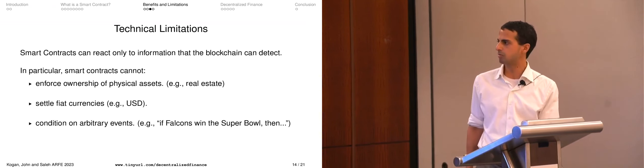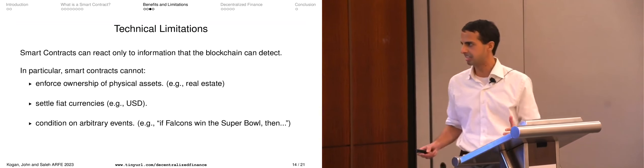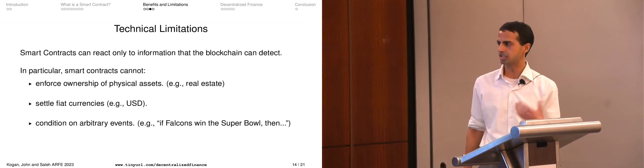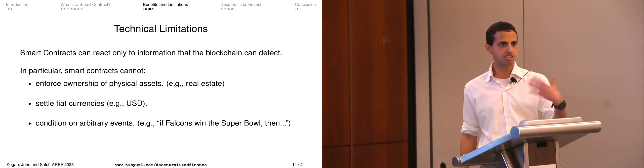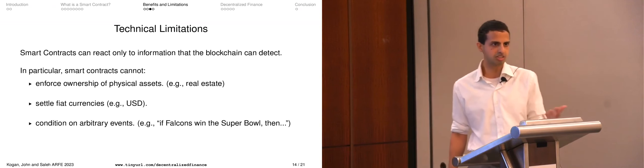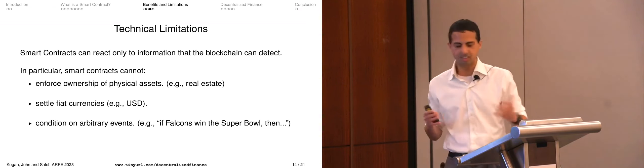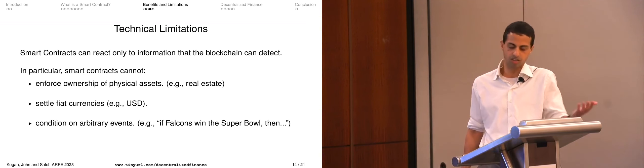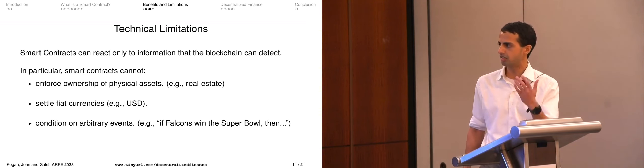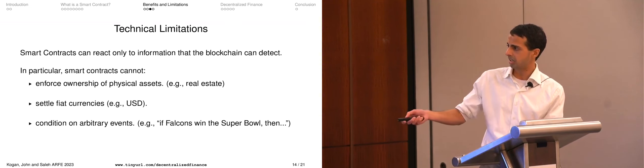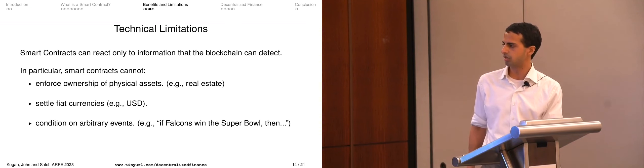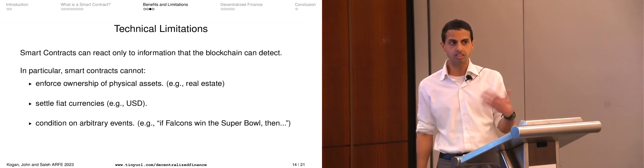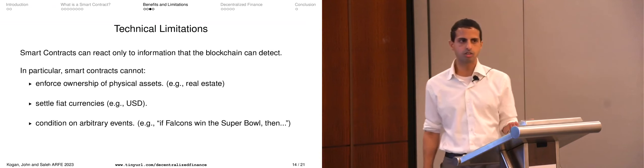Another important limitation: blockchains like Ethereum cannot settle fiat currencies. The Ethereum blockchain doesn't have the power to create new US dollars — that would be considered counterfeit. This introduces risk when trading tokens on Ethereum, since it can't just create dollars out of thin air. A third thing smart contracts can't do: they can code conditional logic, but they can't condition on arbitrary events. For example, if I wanted to credibly commit to paying you ether if the Falcons win the Super Bowl, how is the blockchain going to know the Falcons won?